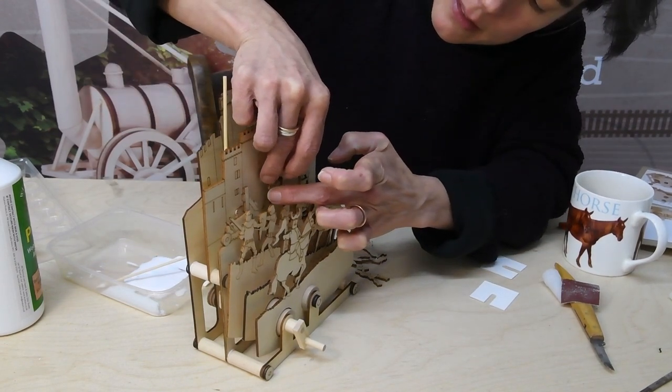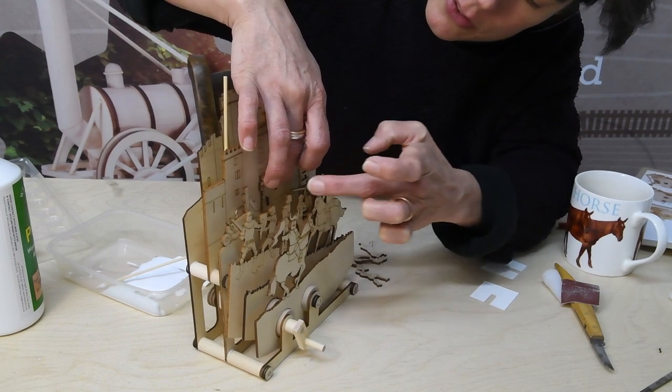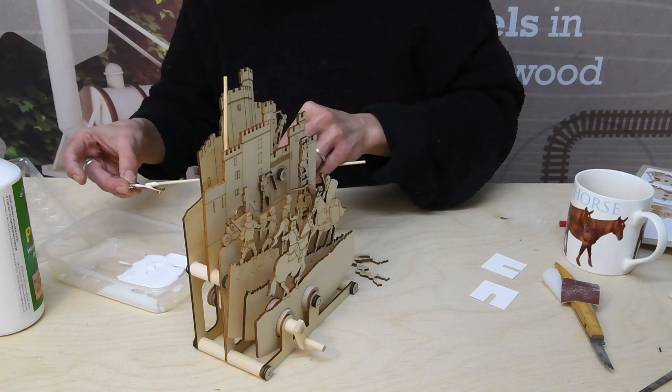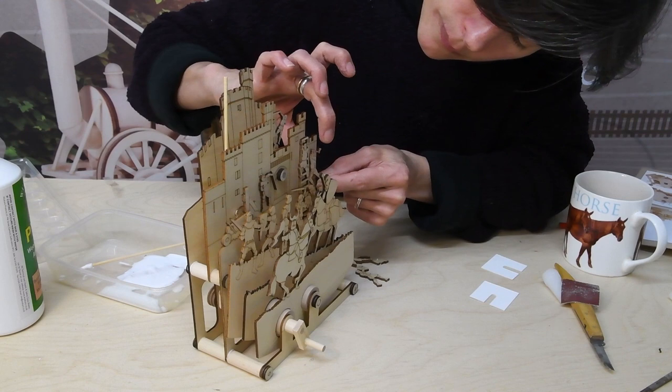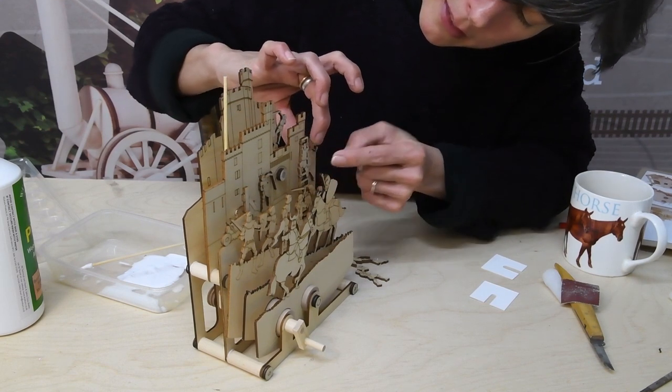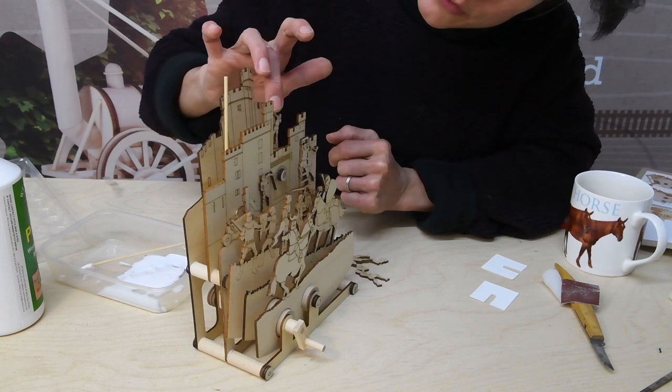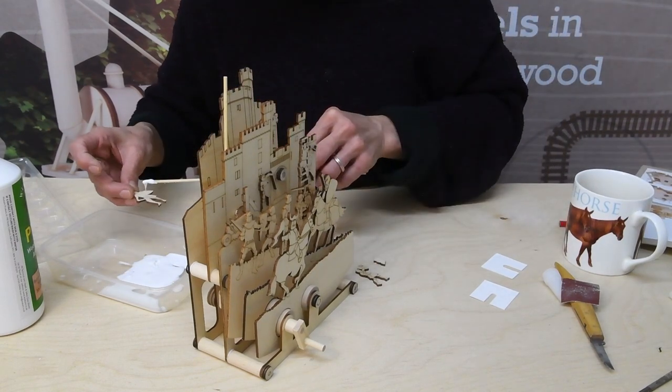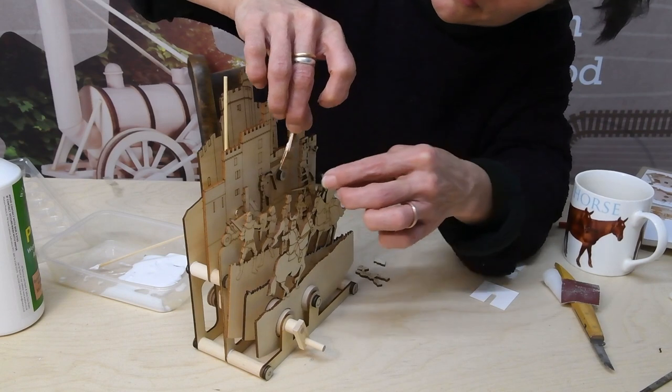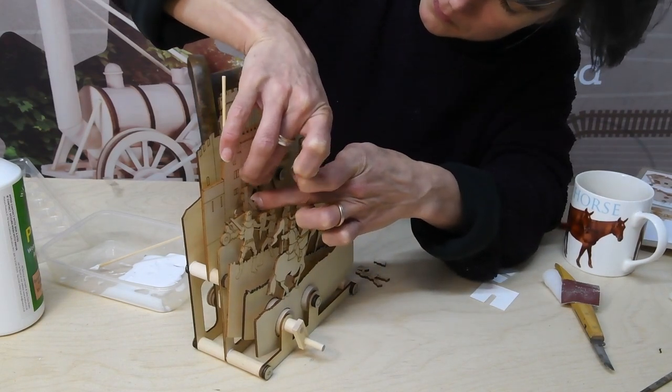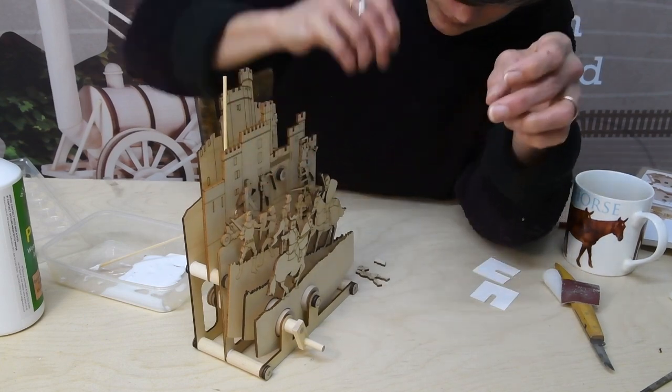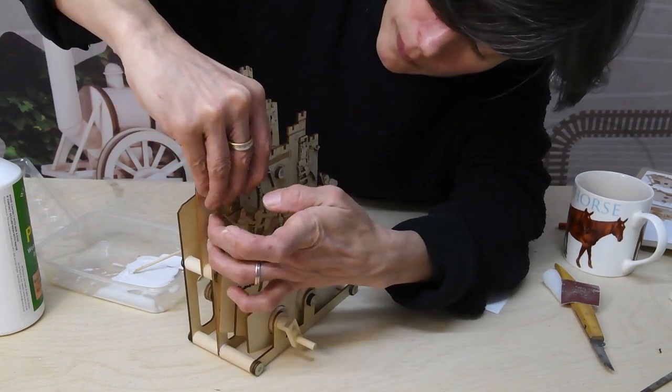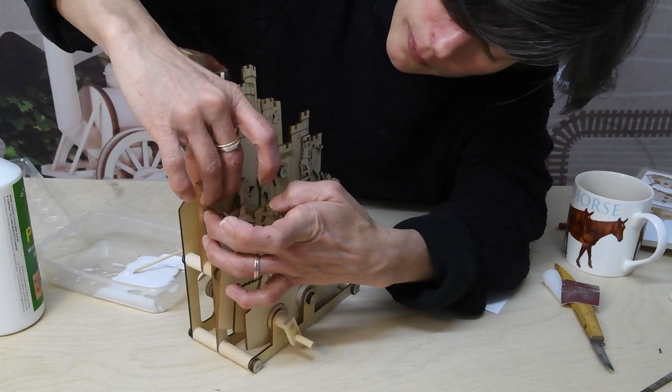So I usually have them having a bit of a fight across the front of the castle there. Bear in mind that this piece here turns round with these on the battlements so you don't want to get your figure in the way of that.